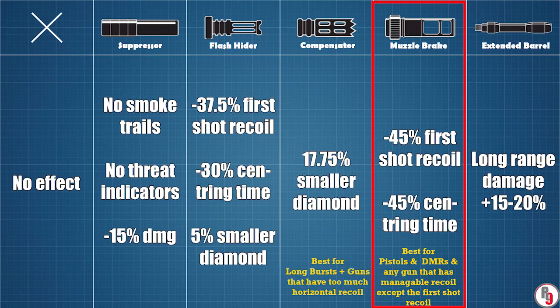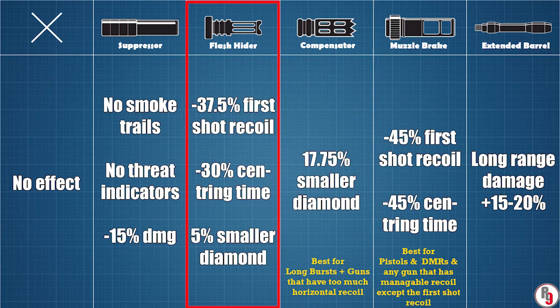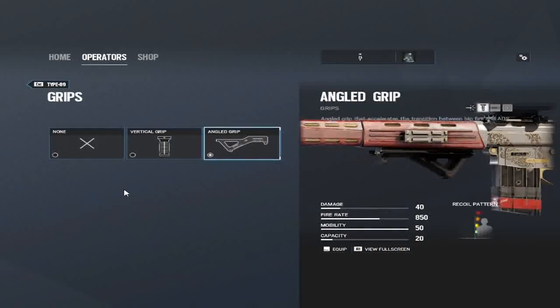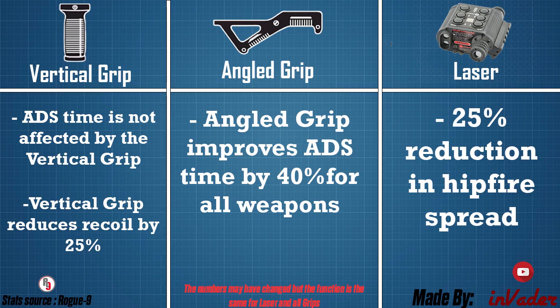Muzzle brake reduces first-shot recoil and centering time by 45%. DMRs and pistols benefit a lot from muzzle brake since the first shot is always the first shot of a burst — on DMRs and pistols, only use muzzle brake. It also helps guns with manageable recoil except on the first shot, for example the C8 SFW. Compensator reduces recoil diamond by 17.75%, so if you want to do long bursts, use compensator. Flash hider is a mix between compensator and muzzle brake: it reduces centering time and first-shot recoil like muzzle brake, and reduces diamond size like compensator — but it is less effective than either individually.